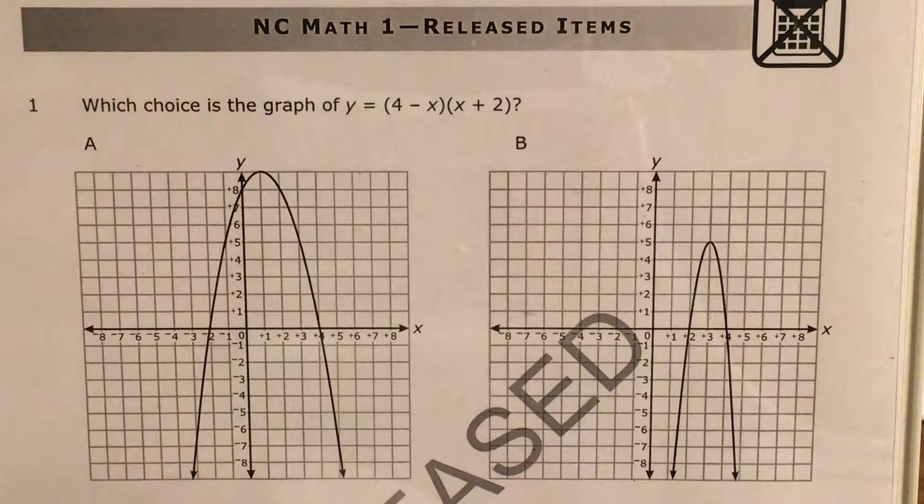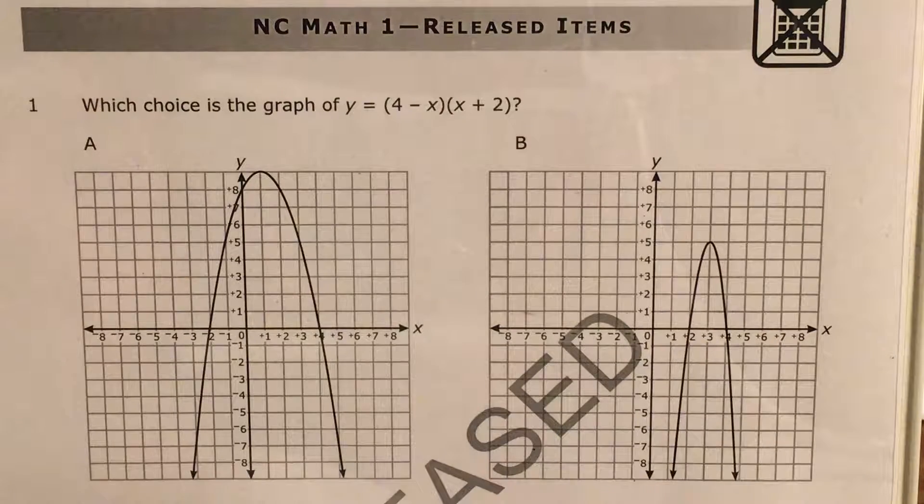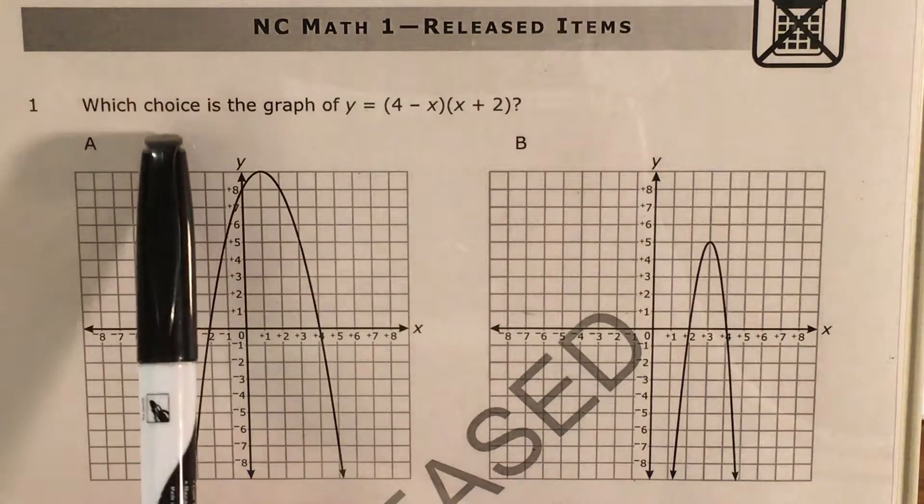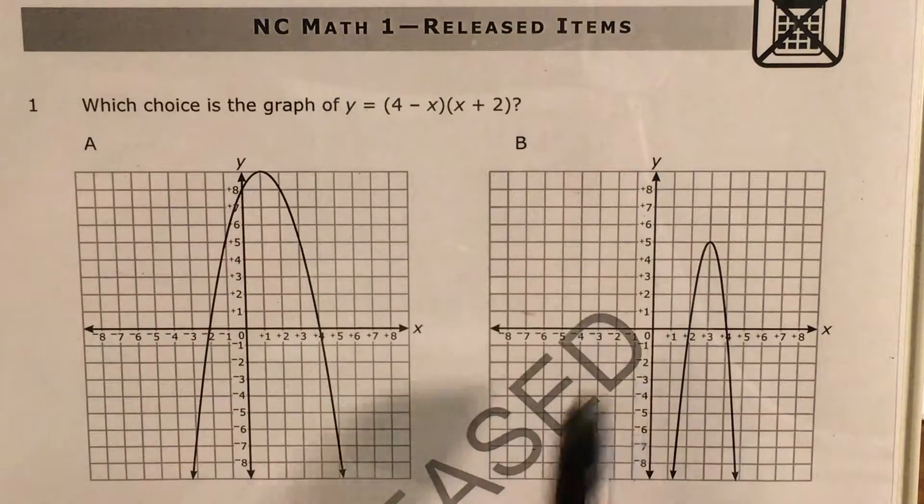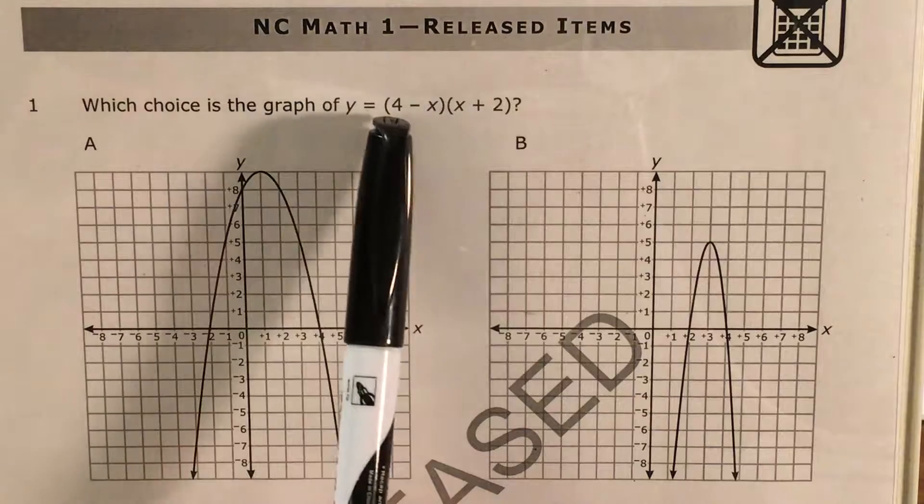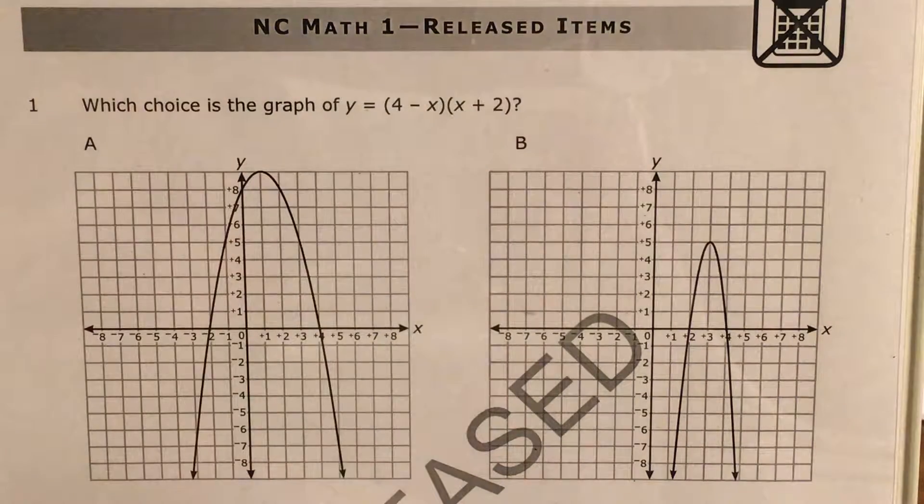What's up math scholars and math haters? This is Mr. W. Today we're going to tackle question 1 in the math 1 questions that North Carolina released this past school year. We can see that we're trying to find out which of our answer choices, and I'm showing A and B, but C and D are at the bottom of the page, is the graph of y equals the linear factor 4 minus x times the linear factor x plus 2.